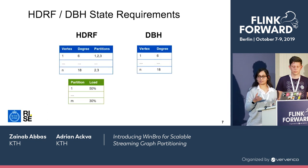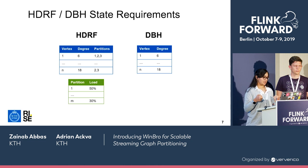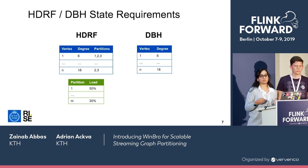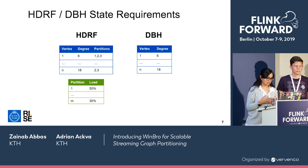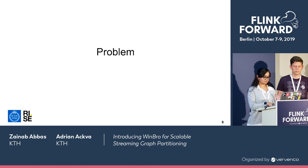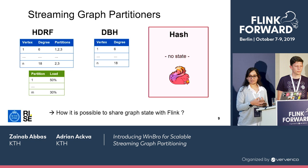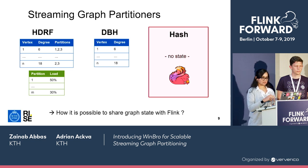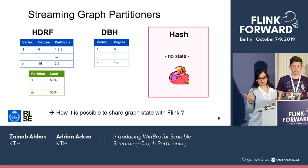These algorithms work on the fly by keeping some state to make smart decisions based on what they've seen so far. For HDRF, it updates the degree count of a vertex and keeps partition information about where it placed each vertex. For DBH, it only keeps the vertex ID and degree information. This state is easy to implement in systems that allow state sharing for parallel partitioning, but the problem is that in Flink's data parallel model, state sharing is difficult and requires careful design decisions. The default Flink partitioning is hash or key-based, which requires no state.